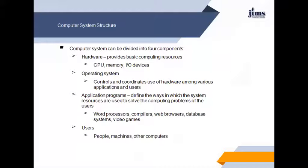Hardware provides basic computing resources like the CPU — the central processing unit — memory such as 4GB or 8GB RAM, hard disk drives of 512GB or 1TB, and input/output devices. Input/output devices include the keyboard, mouse, and similar peripherals, while printers are output devices. So, all these things come under the category of hardware. Hardware provides basic computing resources whether it is the CPU, memory, or input/output devices.